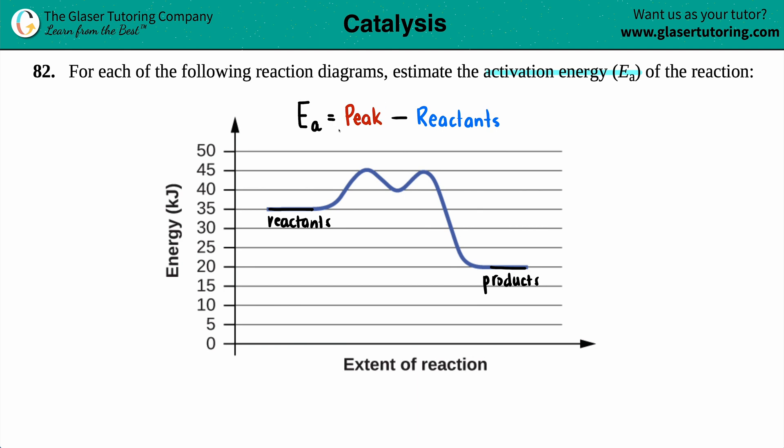Now just know that the peak energy is always called the transition state, but I thought it was easier to say peak. Now the activation energy is the required amount of energy that you need to get over or to reach in order to make your products. But if you don't reach that required amount of energy, you're not going to make your products.